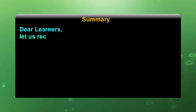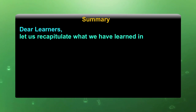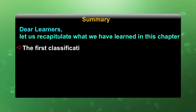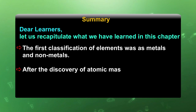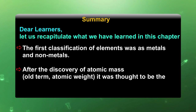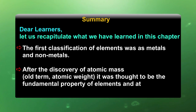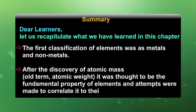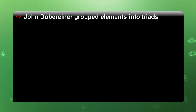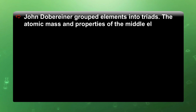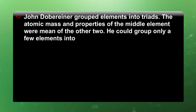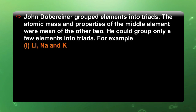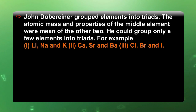Dear learners, let us now recapitulate what we have learnt in this chapter. The first classification of elements was as metals and non-metals. After the discovery of atomic mass (old term: atomic weight), it was thought to be the fundamental property of elements and attempts were made to correlate it to their other properties. John Dobereiner grouped elements into triads; the atomic mass and properties of the middle element were the mean of the other two. He could group only a few elements into triads, for example: lithium, sodium and potassium; calcium, strontium, barium; chlorine, bromine and iodine.